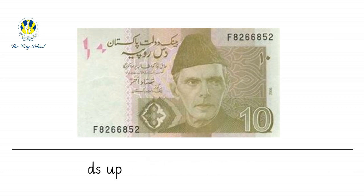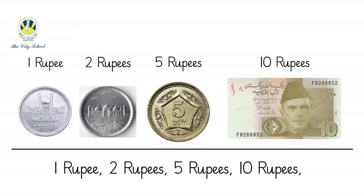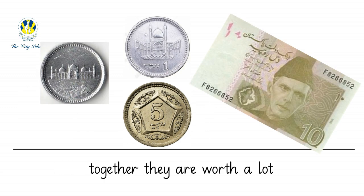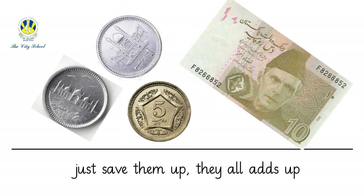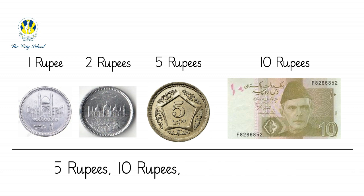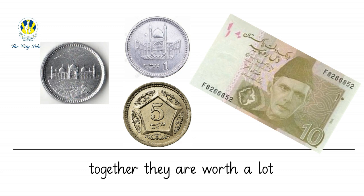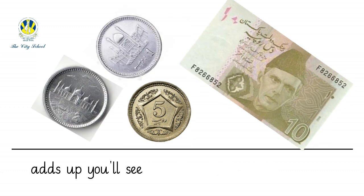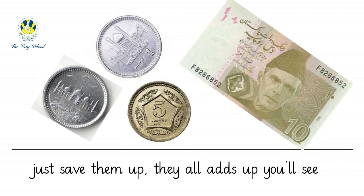One rupee, two rupees, five rupees, ten rupees. Together, they are worth a lot. Just save it up — it all adds up. One rupee, two rupees, five rupees, ten rupees. Together, they are worth a lot. Just save it up — it all adds up.